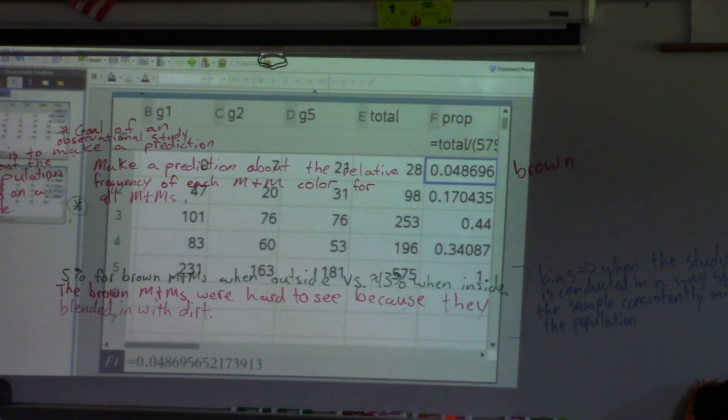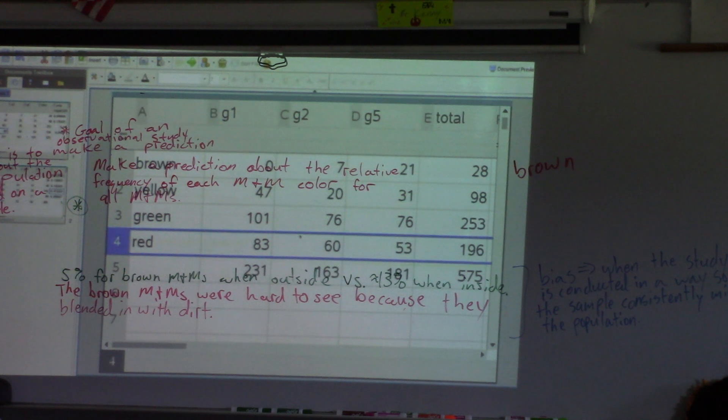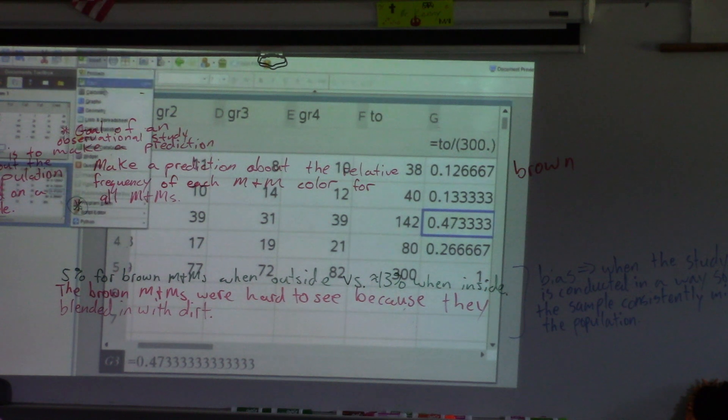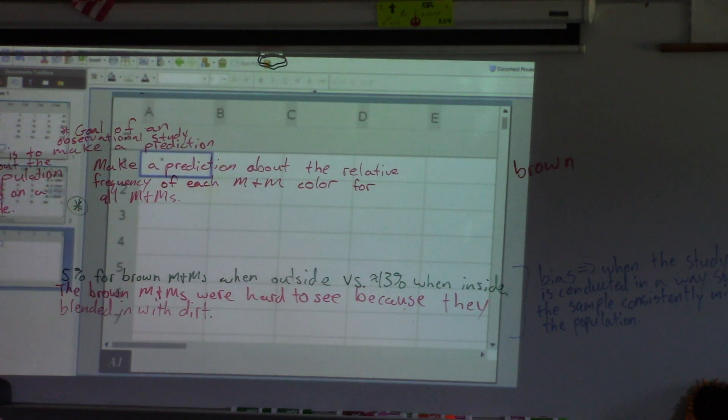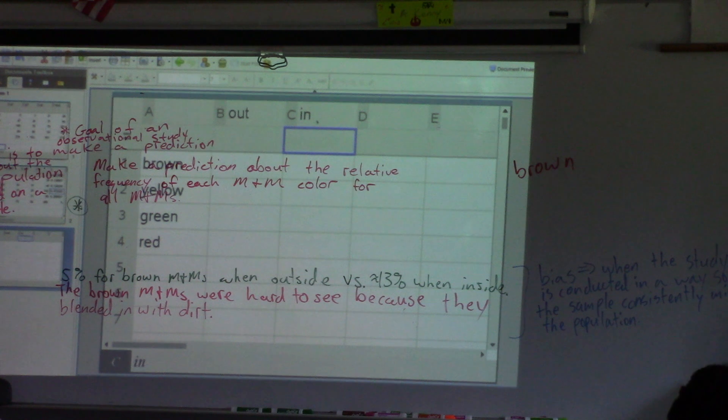Once you're done with that, what I do want you to do is I want you to go back to your calculator. We may need to do... No, we should be able to do it here. Nope. You're going to have to make a new page. So, do a new list in spreadsheets. Do your M&M colors again. Brown, yellow, green, and red.